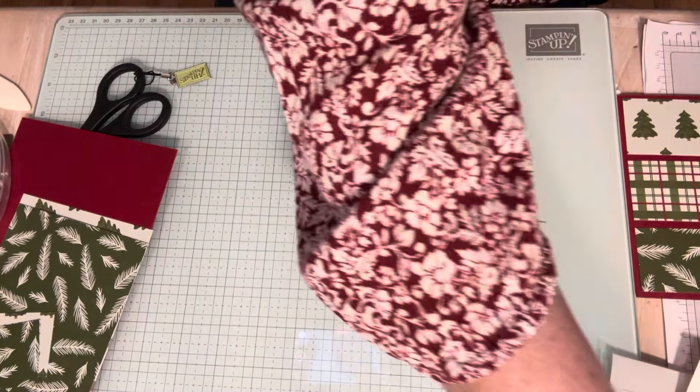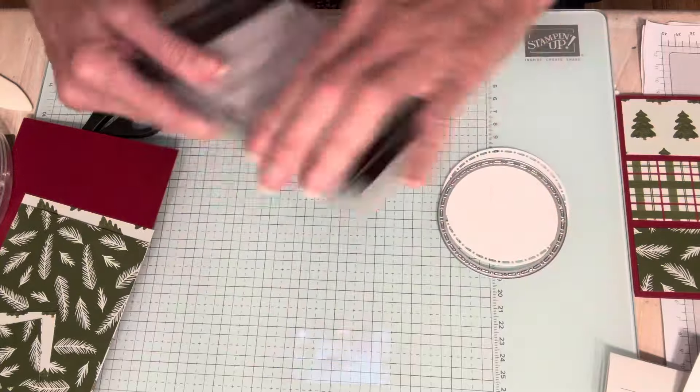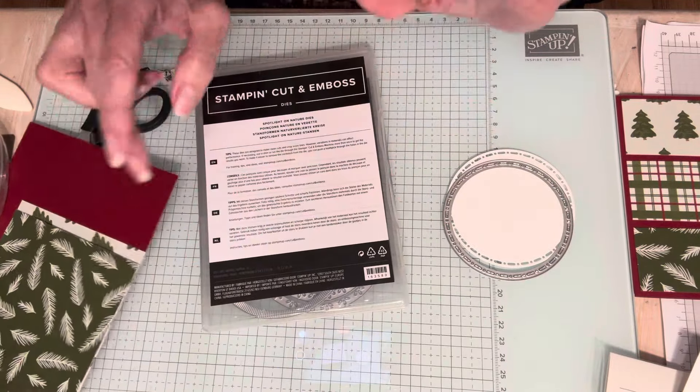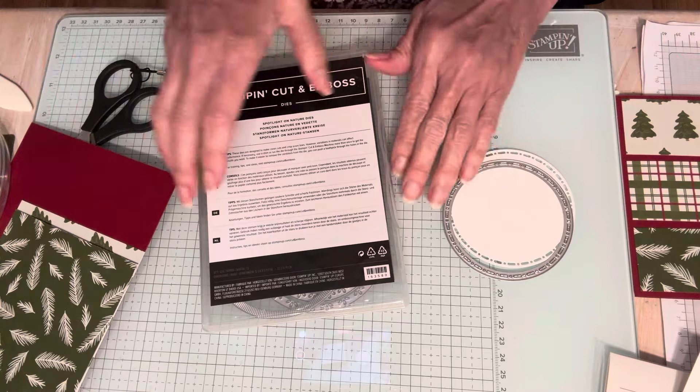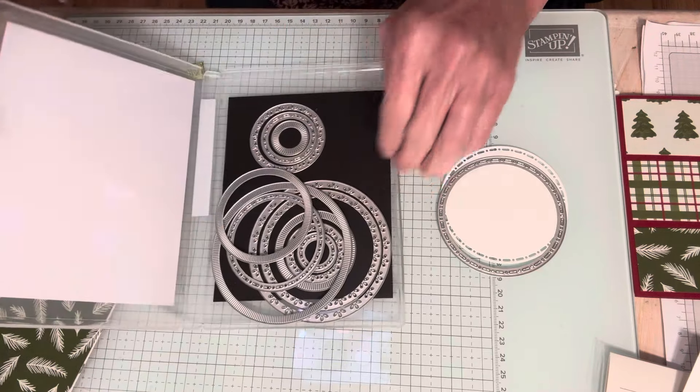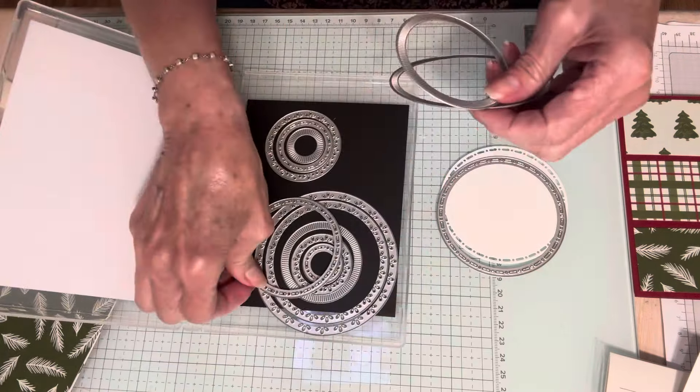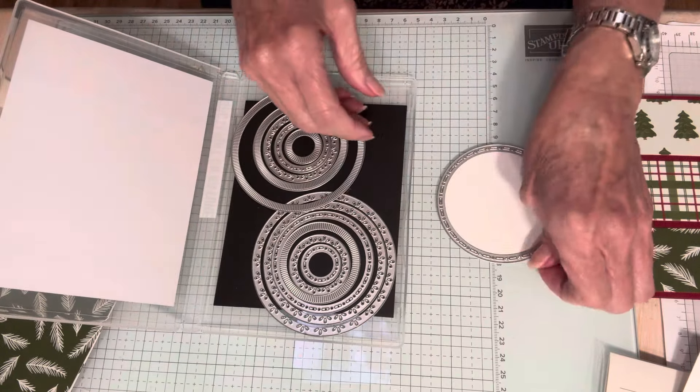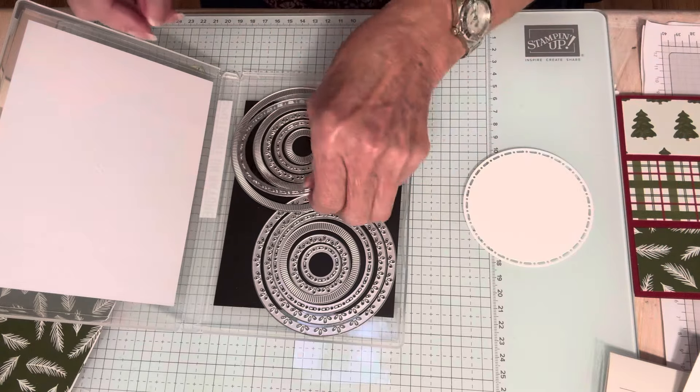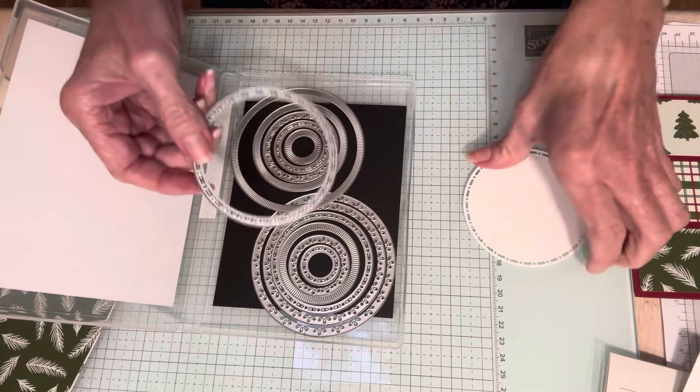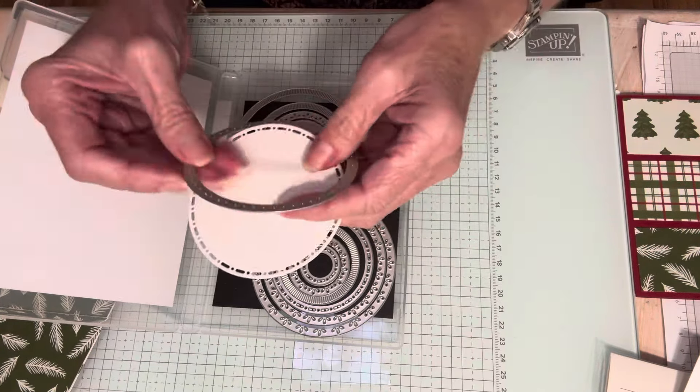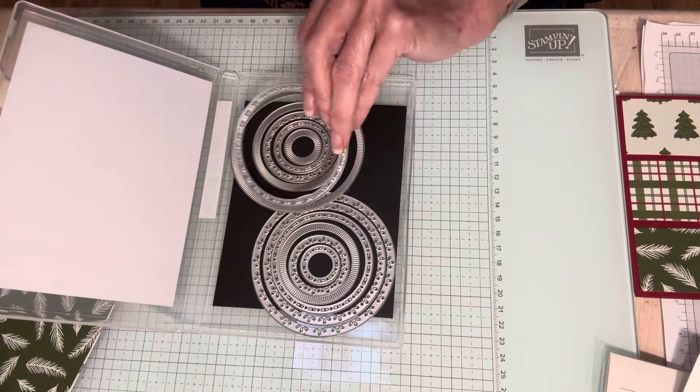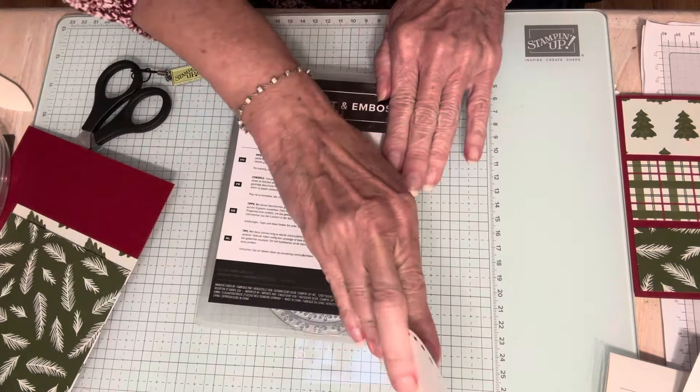Now I'm going to be using Spotlight on Nature. And I never got the stamp set, but I did get the dies. And there's so many amazing dies in here. I think there's 12. And they layer. But they also, individually, they're gorgeous. So I used this one and I cut this out of just white cardstock, just regular white cardstock. Not thick. Nothing fancy.